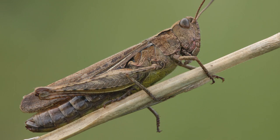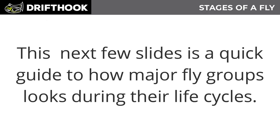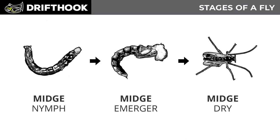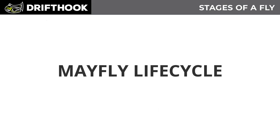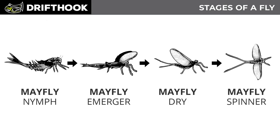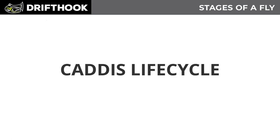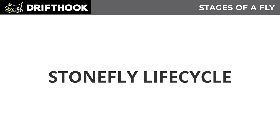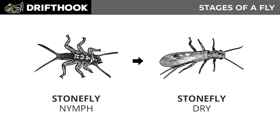This is a quick guide of how the major fly groups look during their life cycles. The patterns that you have so wisely purchased will mimic these life cycles. The midge life cycle consists of the midge nymph, the midge emerger, and the midge dry. The mayfly life cycle consists of the mayfly nymph, the mayfly emerger, the mayfly dry, and the mayfly spinner. The caddis life cycle consists of the caddis nymph, the caddis emerger, and the caddis dry. The stonefly life cycle — in our boxes we carry two: the stonefly nymph and the stonefly dry.